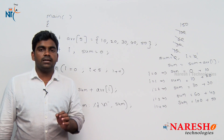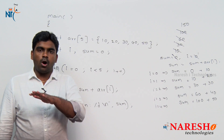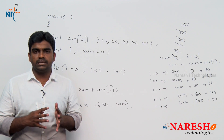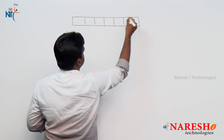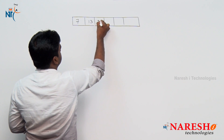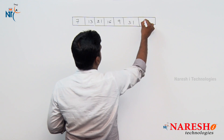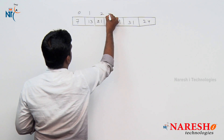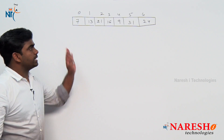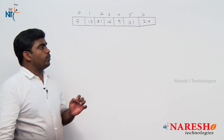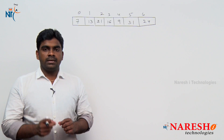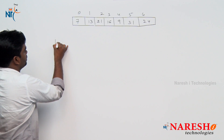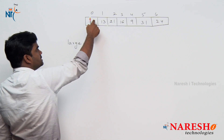Now the next program — what is the largest element in the array among all the elements? We will see how to find the largest element. First, we take one array with some elements: 7, 13, 21, 16, 9, 31, 24 — total 7 elements, size is 7. The logic is: declare one variable large and consider the first element is the largest element — large equals arr of 0.